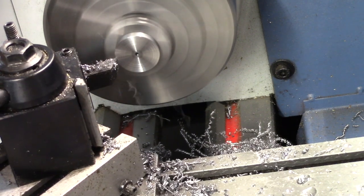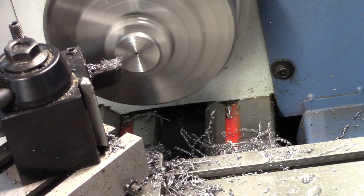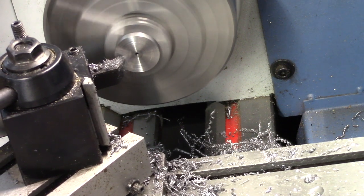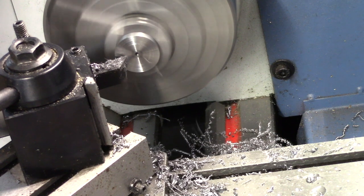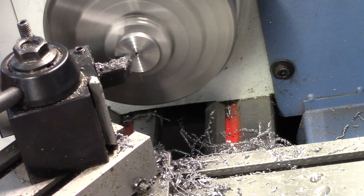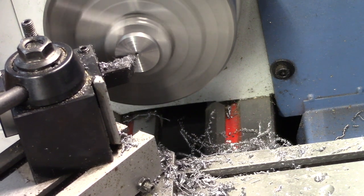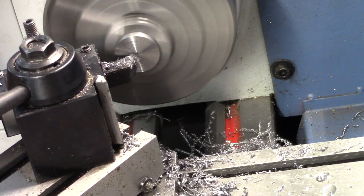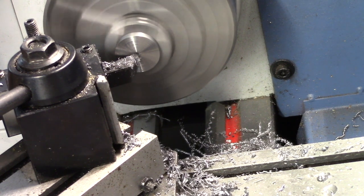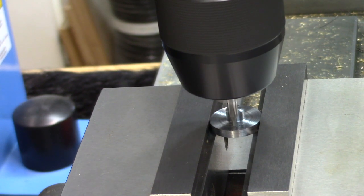The crankshaft plate is flipped and held in a collet chuck by the boss, while the reverse side is faced off. The face of the plate is spot drilled and then drilled out for the crankshaft pin.